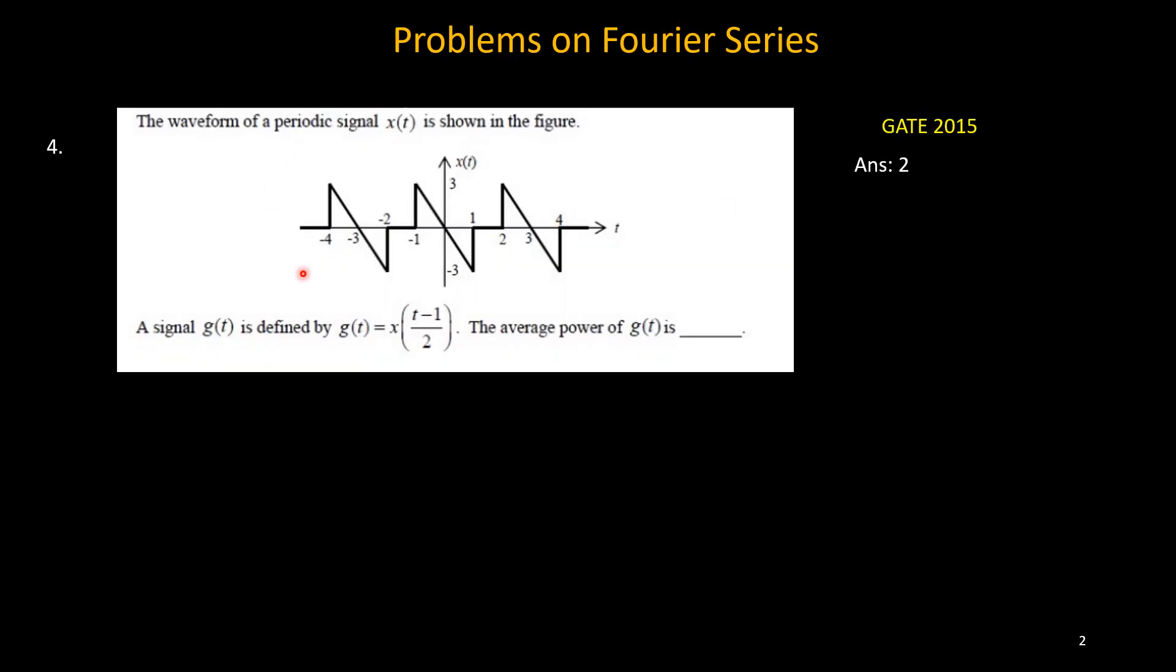Now this problem is taken from GATE 2015 paper. This is about periodic signal x(t). The shape is given here. Now a signal g(t) is defined as x of (t minus 1) by 2. Now we need to find out average power of g(t). Okay, so we need to compute the average power of g(t), not only x(t). Now how to find the average power of g(t)? We will solve this problem.